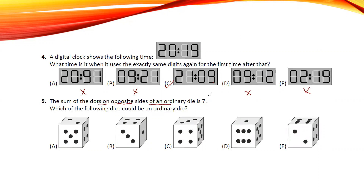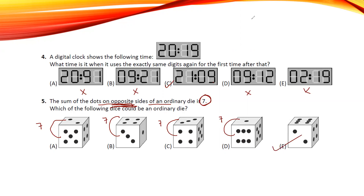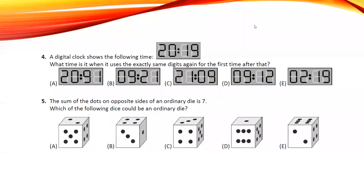The sum of dots on opposite sides of an ordinary die is seven — that's the key. Here you see adjacent side seven, adjacent side seven, adjacent side seven, adjacent side seven. So this will be our answer.